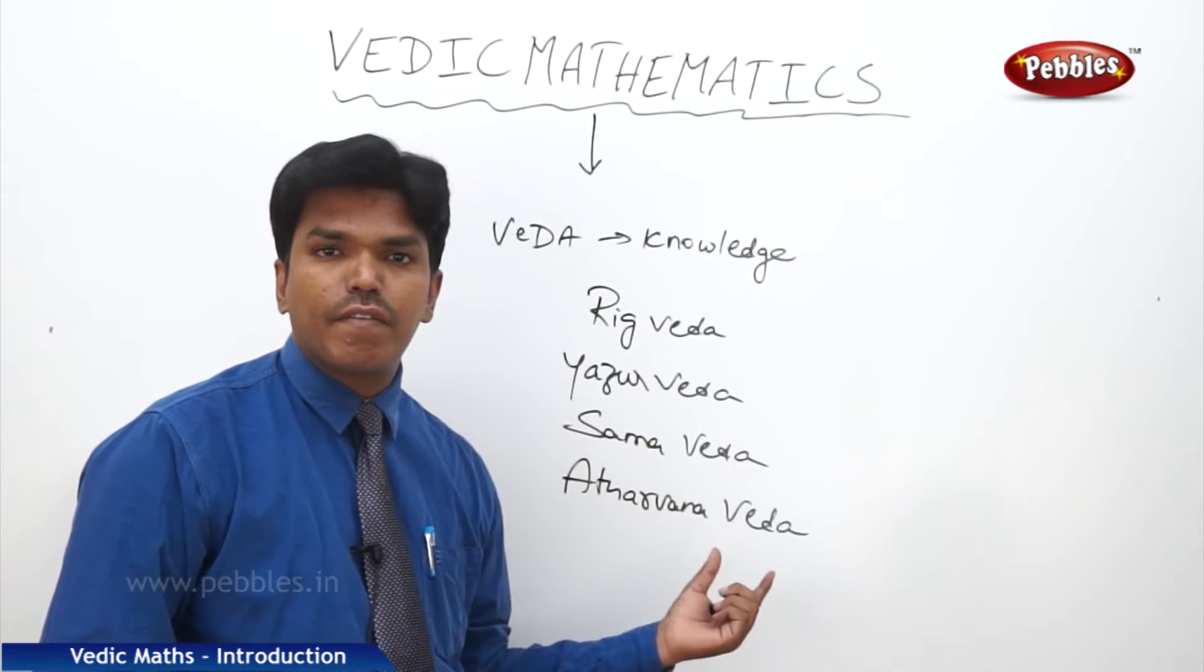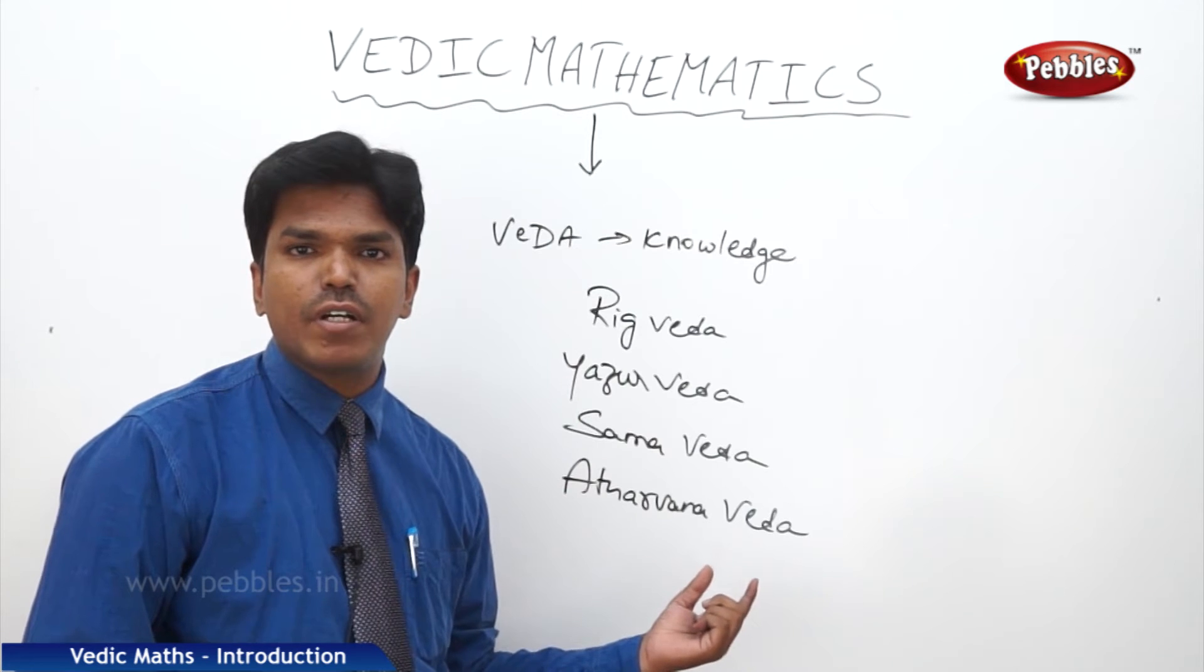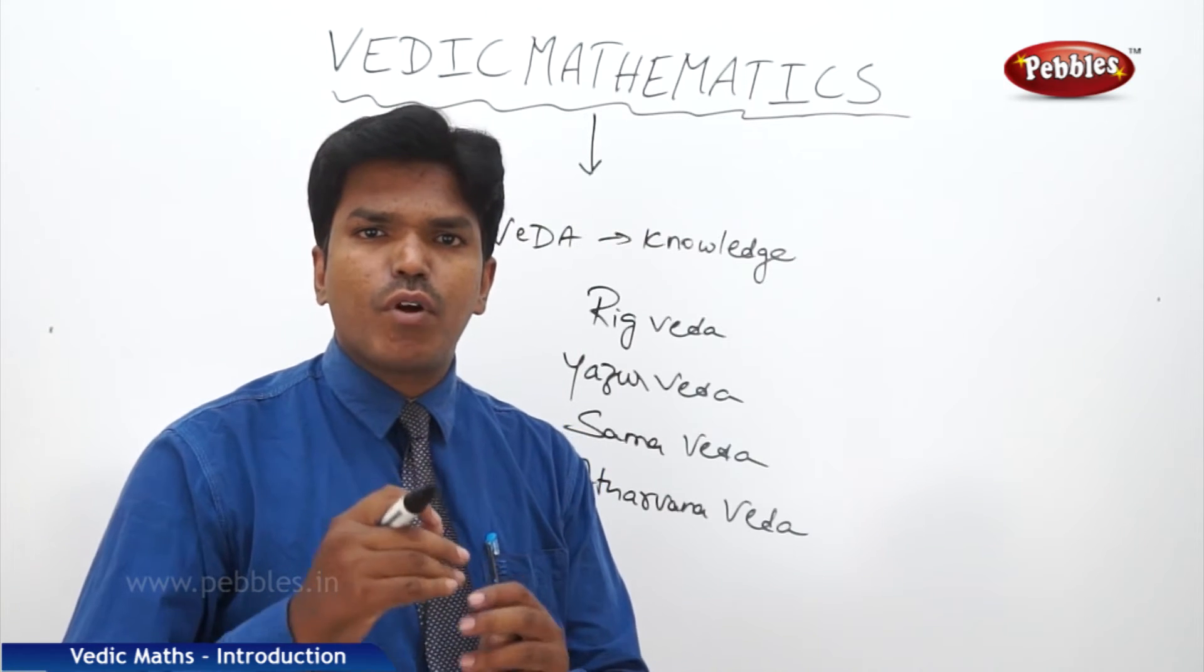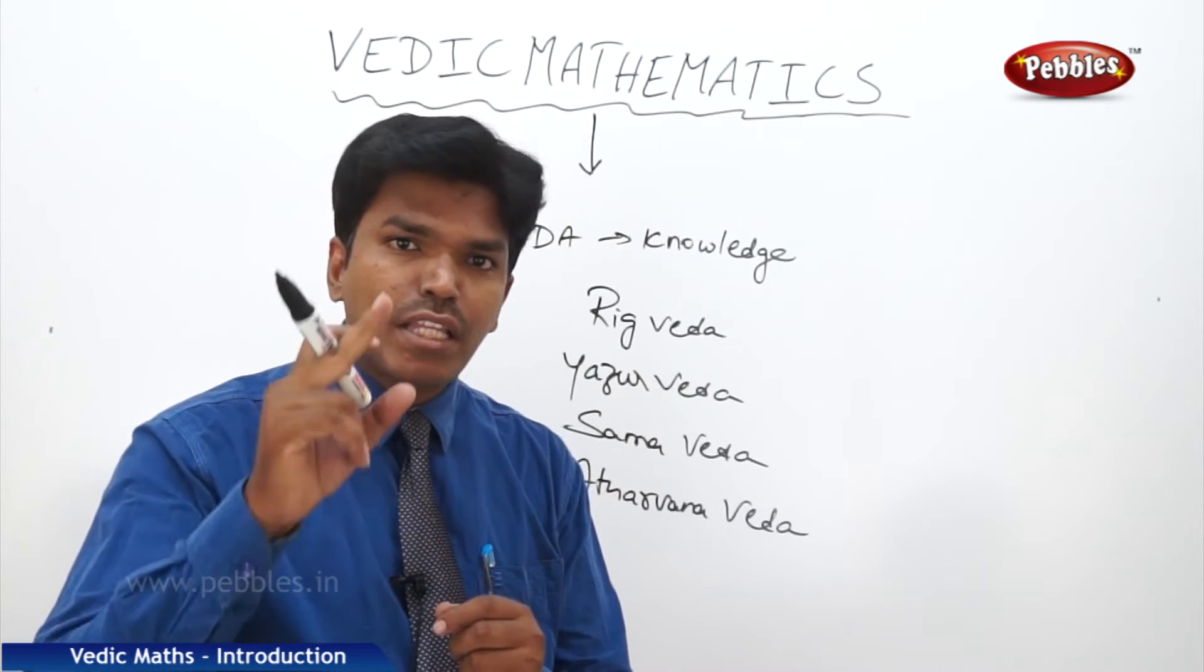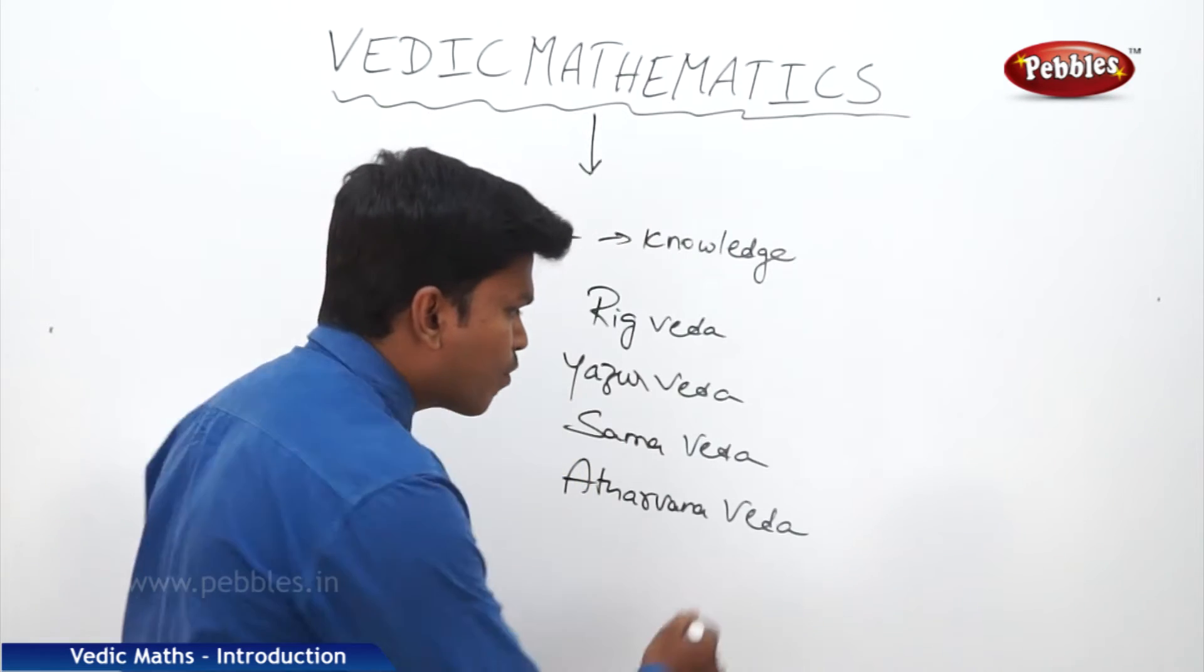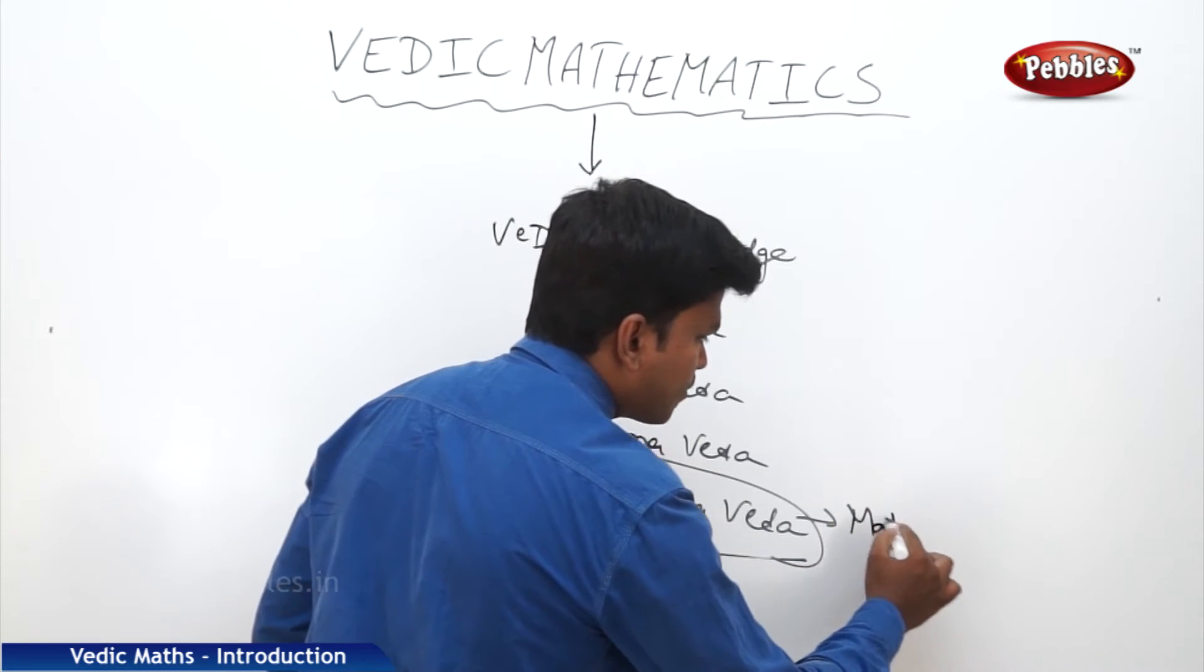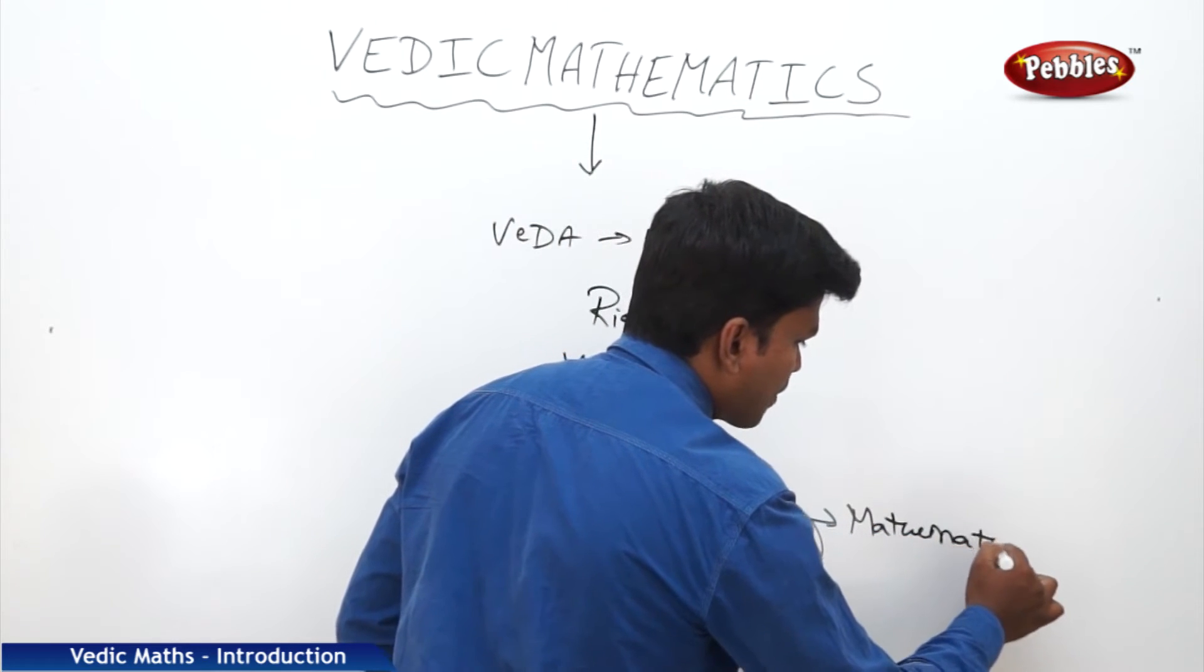So the fourth Veda, Atharvana Veda, this is the base for all the science, technology, architecture, and even the mathematics also. So from this fourth Veda, we have taken the mathematics.